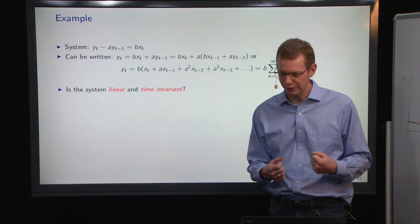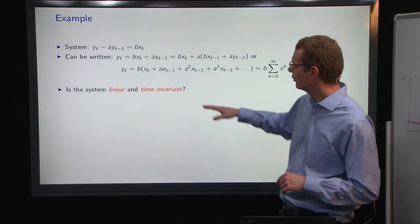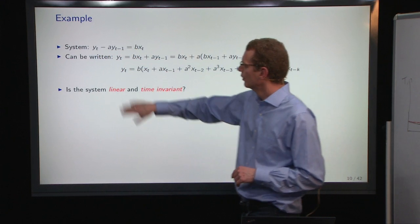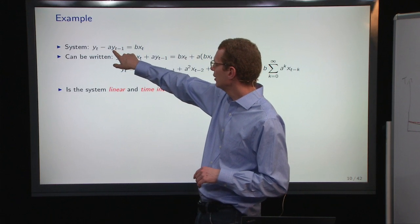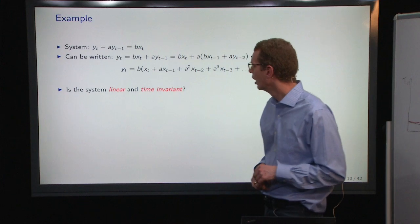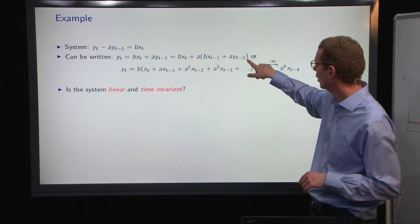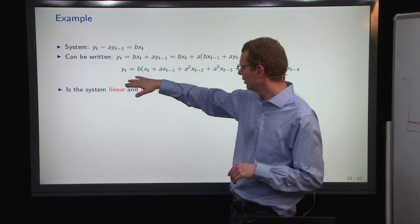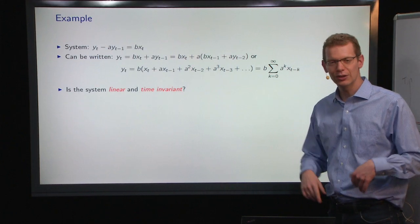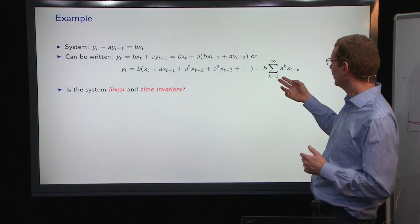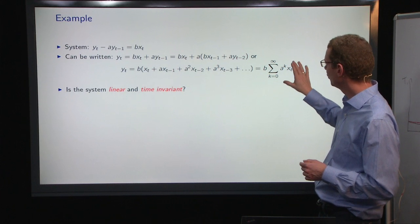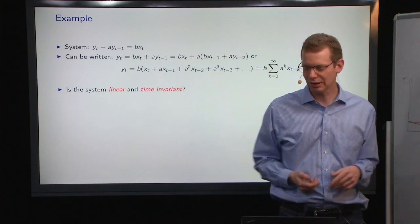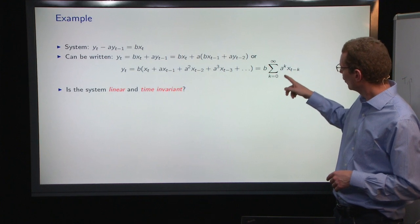As a simple example of that, if we have a system yt minus a*yt-1 equals b*xt, we can move the yt-1 part to the right-hand side like this, and then we can expand that. What we see is that whenever we expand, we get a new yt. So effectively, we get an infinite sum of previous inputs here. So this is the impulse response for this system, this AR1 process. Effectively, if we use the ARIMA class.